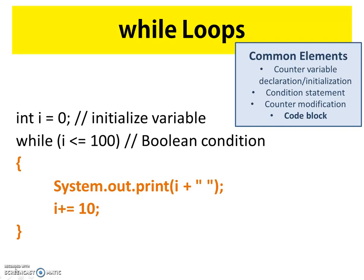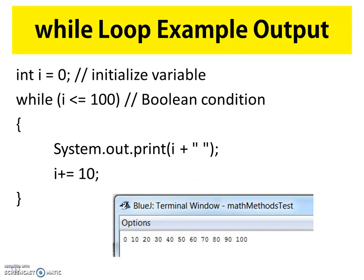After the print statement, we have our counter modification statement. The code block for a while loop also contains the counter modification statement. In this instance, a compound operator is used to increment our counter variable i by 10. So if we were to add our while loop to a properly formatted main method within a class, our output would look like this: a string of values starting at our counter initialization value of 0, being increased by 10 up to and including 100.